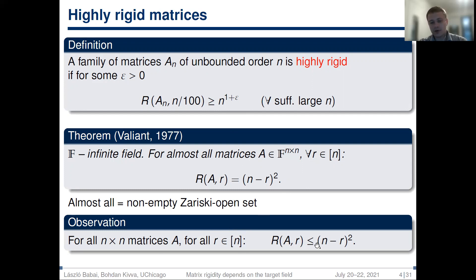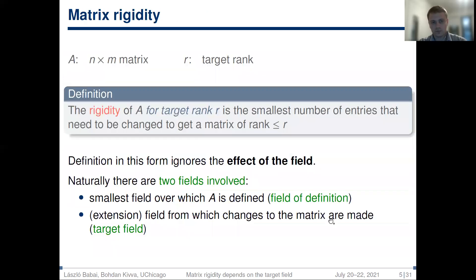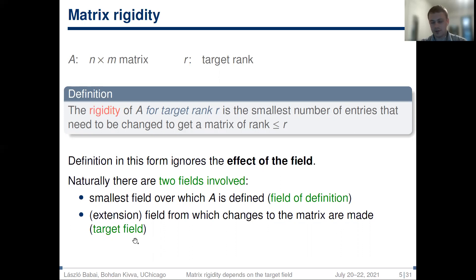Note that the definition given on the first slide does not take into account the effect of the field, and naturally there are two fields involved in this definition. The first field is the field over which matrix A is defined — we call this the field of definition. The second field is a possibly larger extension field over which we allow changes to the matrix, and we call this the target field.